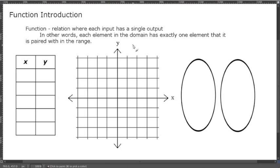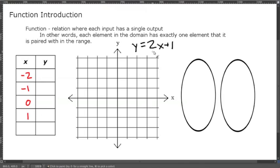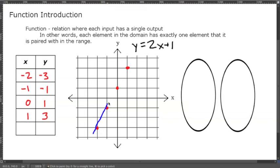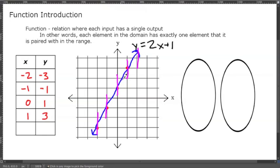We can also determine if an equation is a function. For y equals two x plus one, if we pick x values of negative two, negative one, zero, and one: plugging in negative two gives y equals negative three; negative one gives y equals negative one; zero gives y equals one; and one gives y equals three. Connecting those points with a straight line, no matter how many vertical lines we draw, each x value maps to only one y value — therefore it is a function.